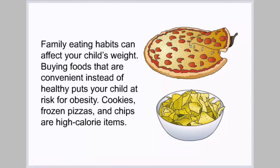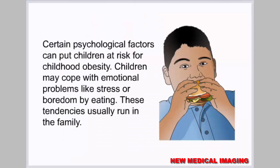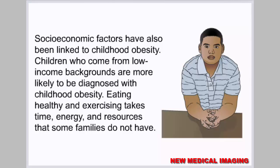Cookies, frozen pizzas, and chips are high calorie items. A family history of obesity is another risk factor, as children from overweight families are more likely to be overweight. Certain psychological factors can also put children at risk — children may cope with stress or boredom by eating, and these tendencies usually run in the family. Socioeconomic factors are also linked to childhood obesity, as healthy eating and exercise require time, energy, and resources that some families do not have.